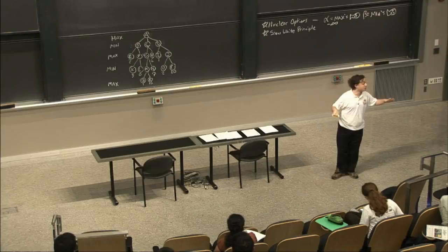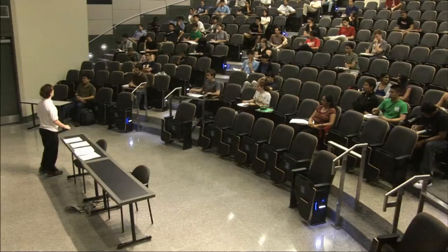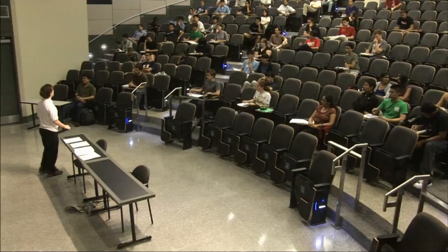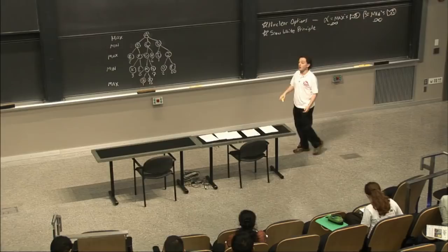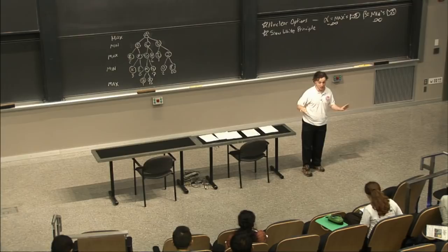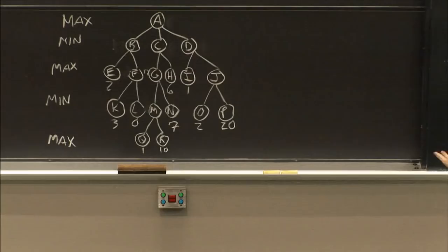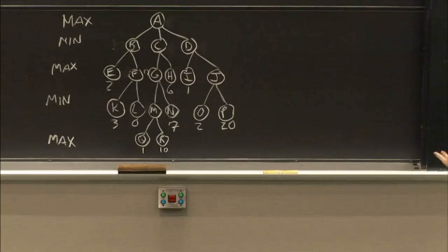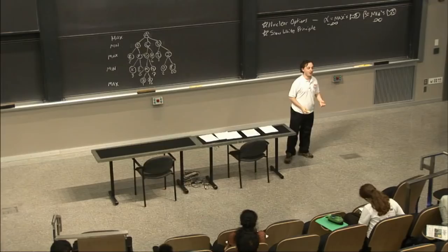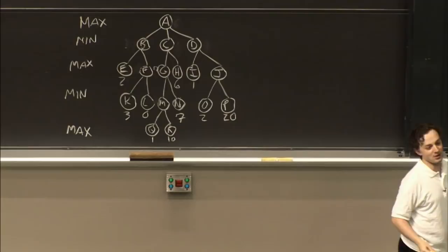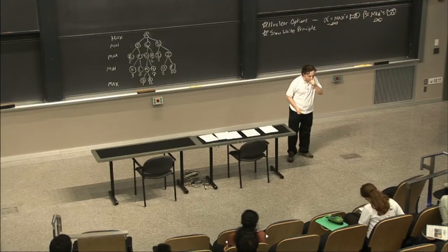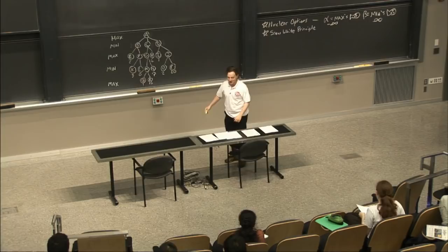A good default for beta is positive infinity. The minimizer comes in thinking the maximizer automatically wins if it doesn't look at the node — that makes sure both the maximizer and minimizer are willing to look at the first path they see every time. If 10 was alpha, the maximizer would reject everything except P, and then we wouldn't have a useful tree. That's why we set negative infinity and positive infinity as the defaults.